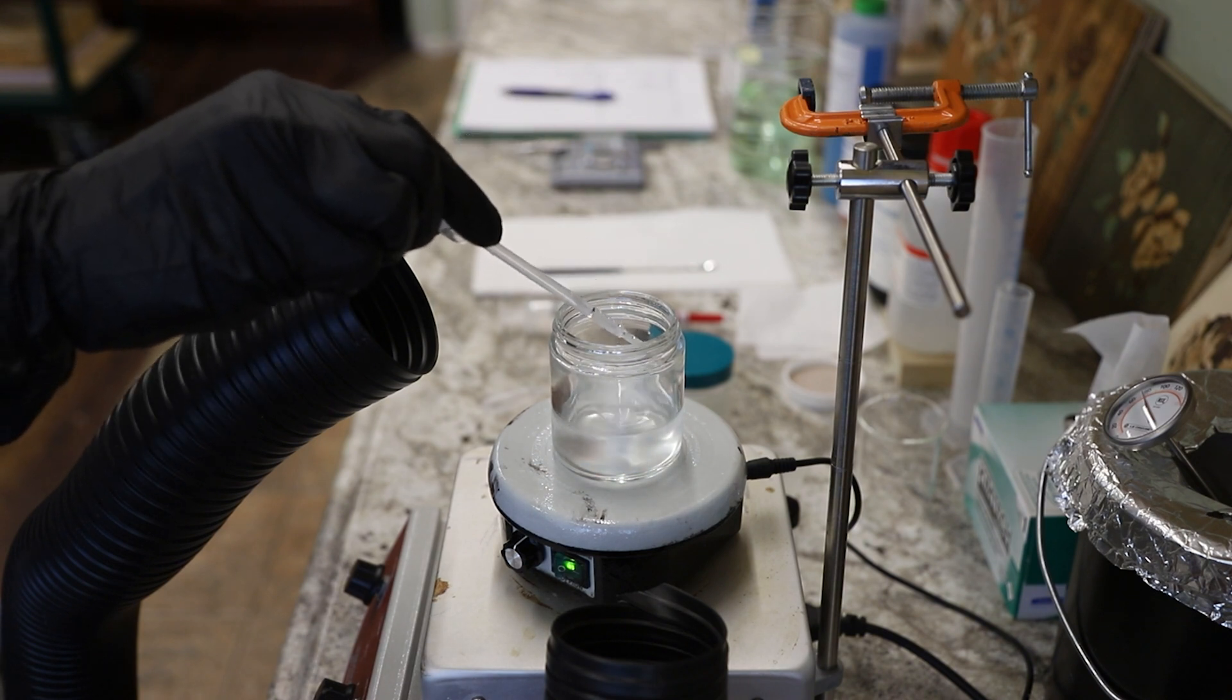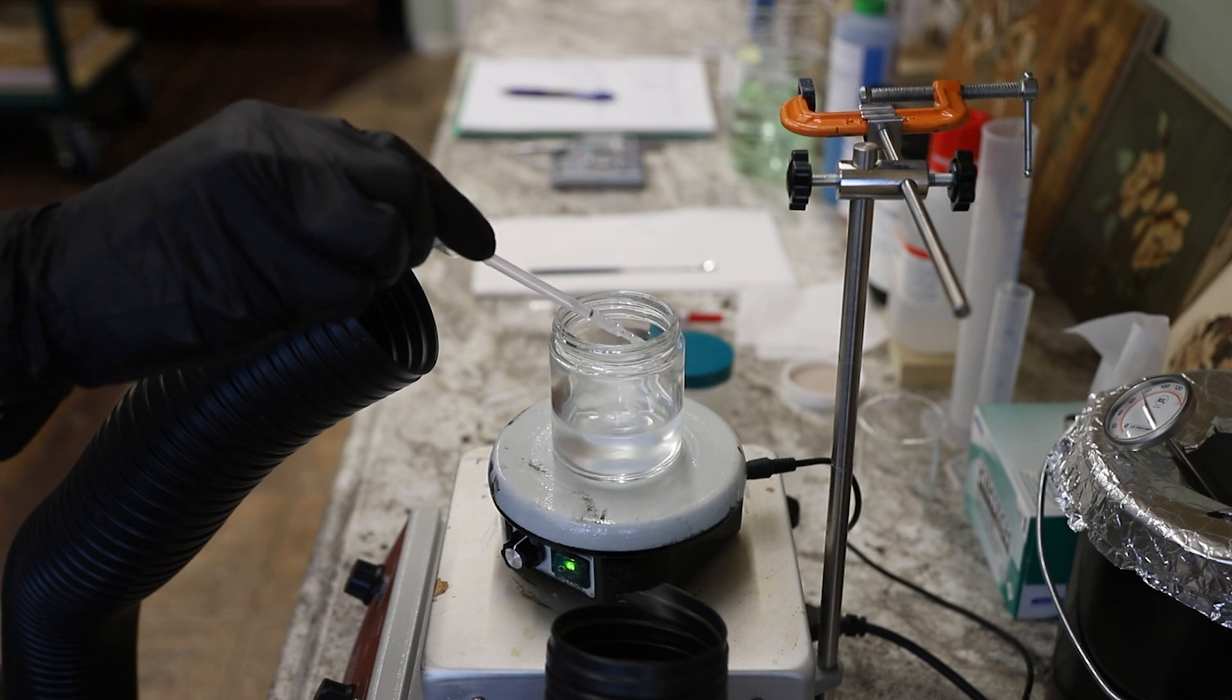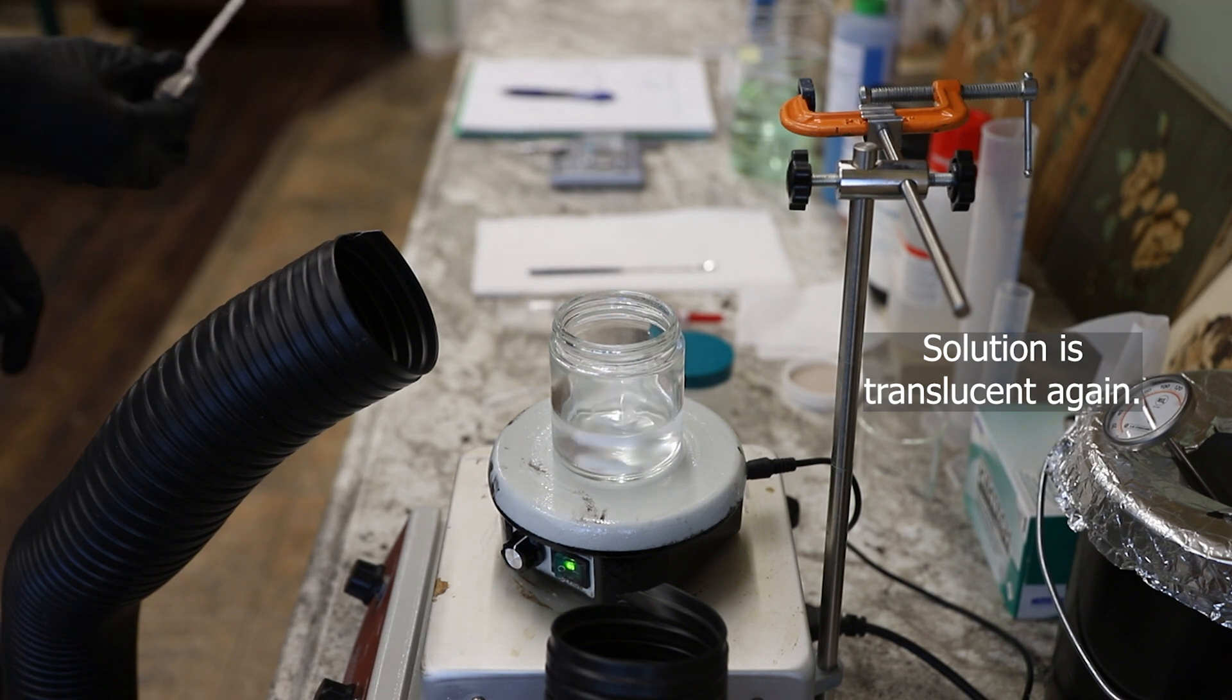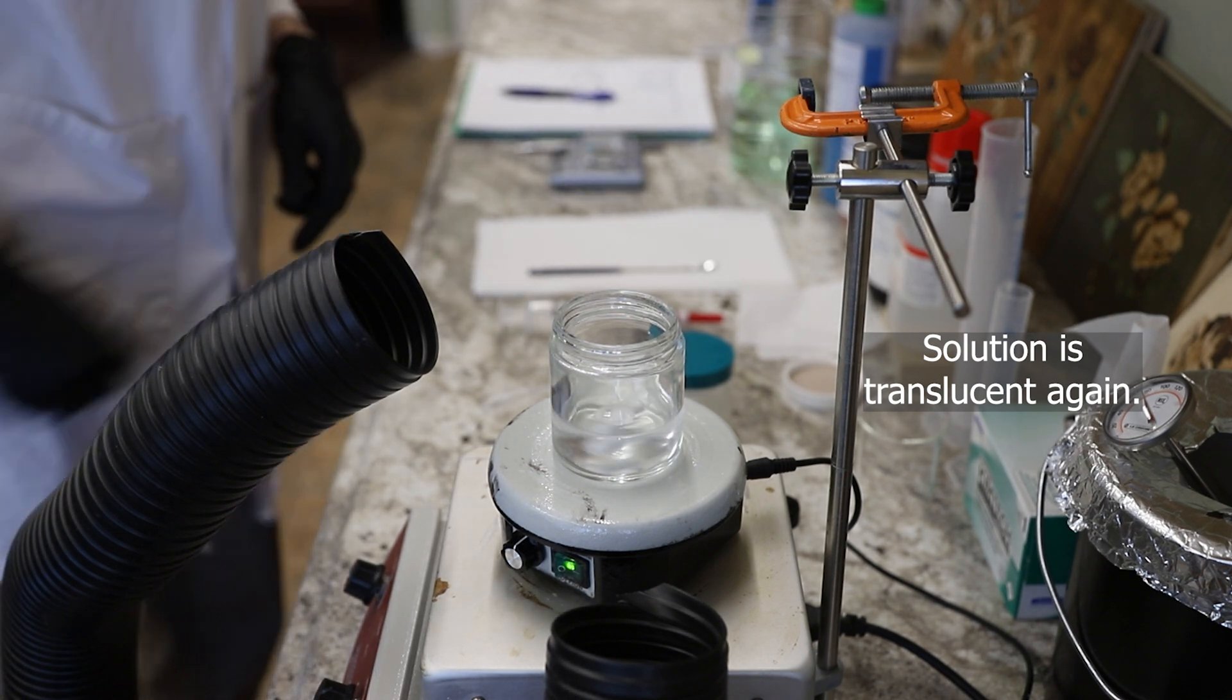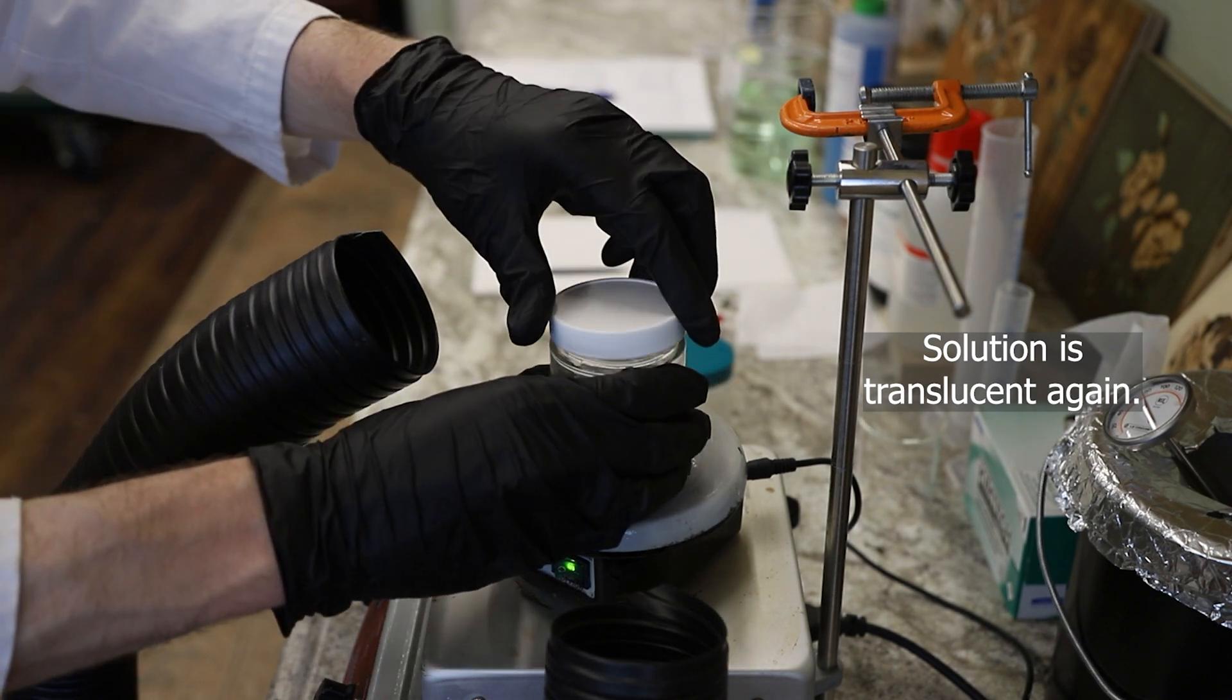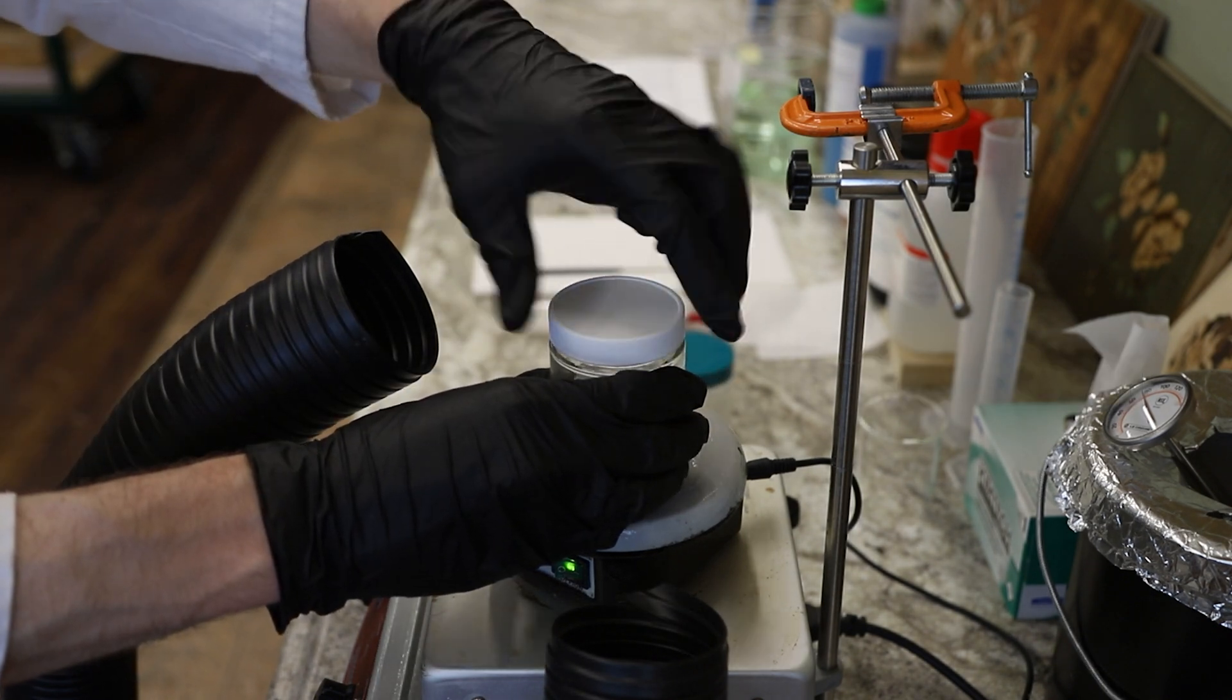Because what you're doing is reducing the concentration of propylene carbonate in the solution. And it's that interaction between the propylene carbonate and surfactant that causes that clouding. So by adding that water, you can bring it right back to translucency.